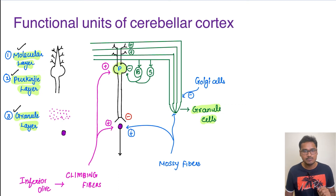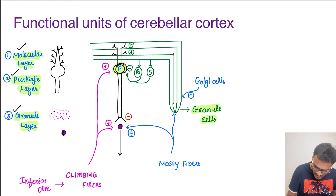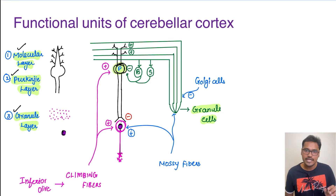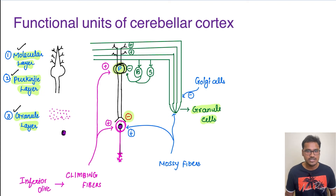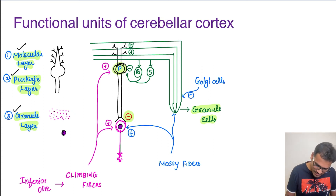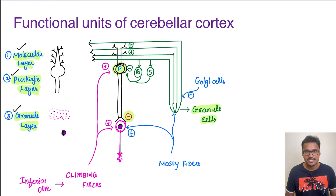There are five cells in the cerebellum. The most important is the Purkinje cell, and the Purkinje cell is the only one that inhibits the deep nuclei. This deep nuclei is the one that gives the final output, and it is stimulated by everybody else except the Purkinje cells. The second cell is the granule cell. Granule cells receive fibers, extend them to form the molecular layer, and can stimulate the Purkinje cells.